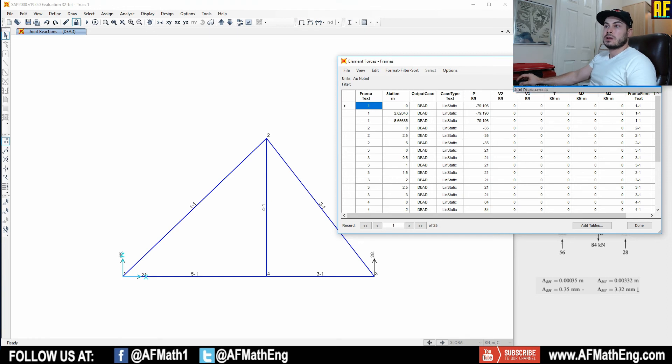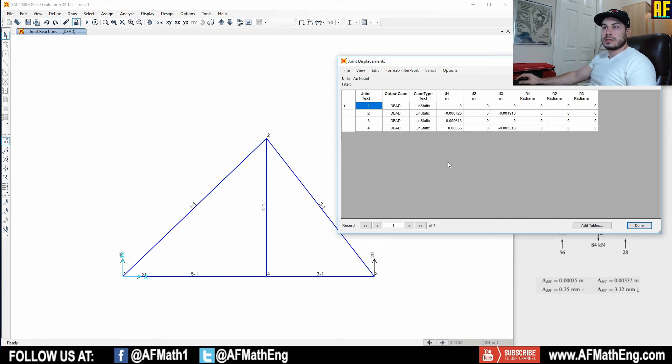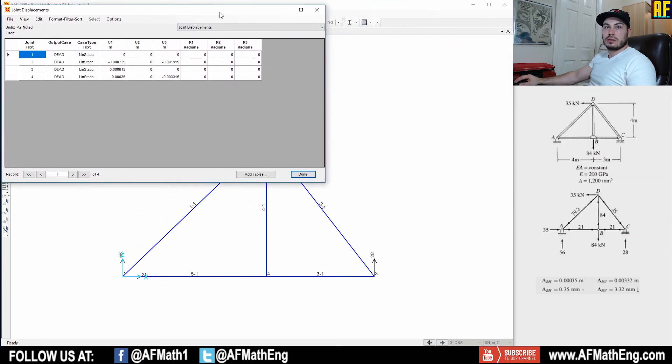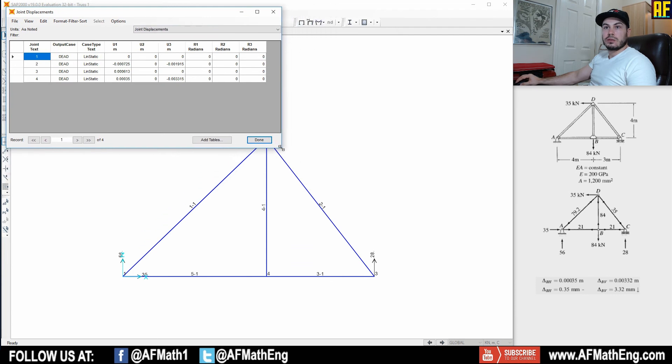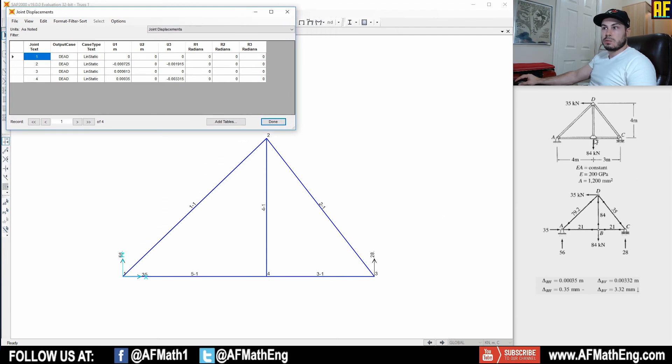And this is why we went ahead and we labeled the truss because now we can take a look at what it corresponds to. So let's go ahead to joint displacements first. And as you can see, if we go over to joint four here, just put this here for you. So if we go over to joint four, which is B on the truss, they got for the horizontal displacement 0.35 to the right millimeter and 3.32 millimeter down. And as you can see, if we go to joint four, U1, which is the one axis, so that is the X direction. That is 0.35 millimeter. That is correct here. And this is in meters. So that is correct. That's the right direction.